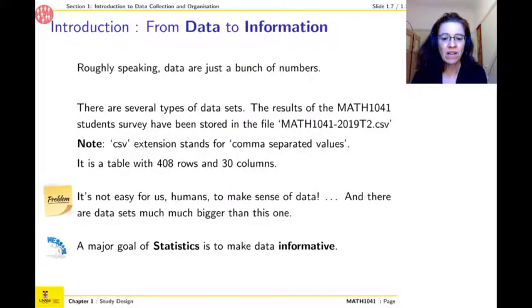You can see right away that we will need to have some way to summarize what happens. So roughly speaking, like in the table we just saw, data are just a bunch of numbers. And in our case, they were organized in a CSV file. It's a little bit like an Excel file. CSV means comma separated values.